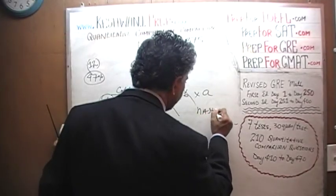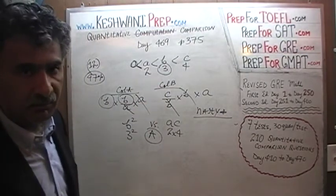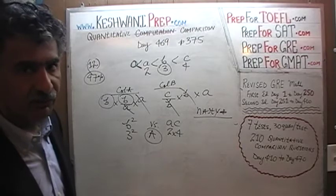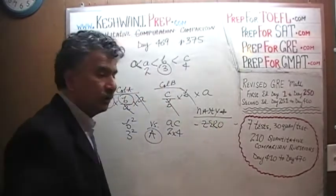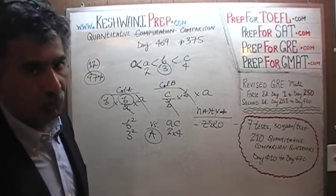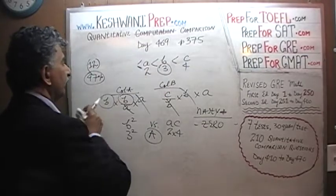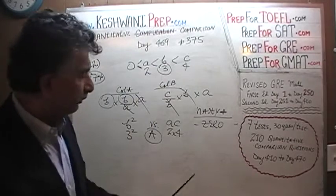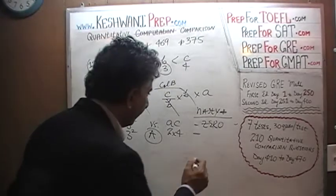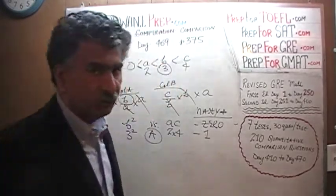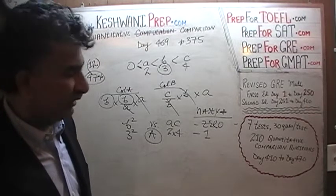Do you remember the list of nasty numbers? The nastiest of all is zero. Here we cannot try zero because we are told that all of these are greater than zero. The next nastiest number is one. You must always go in this order — remain systematic. That's how we save time.